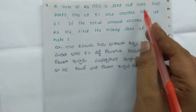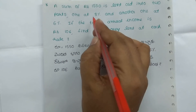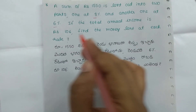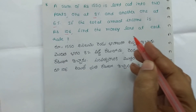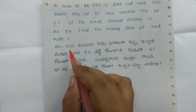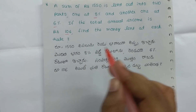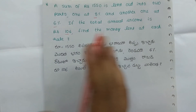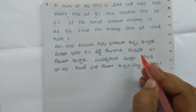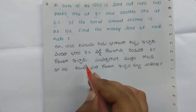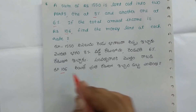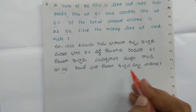Rs. 50 is lent out into two parts. One is at 8% and another is at 6%. If the total annual income is 106 rupees, find the money lent at each rate. If the total annual income is 106 rupees, then you can earn the amount of money.